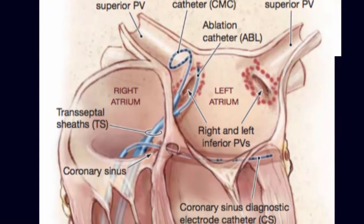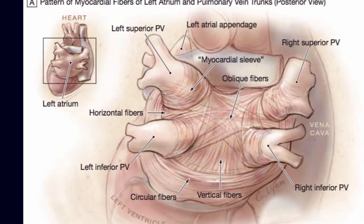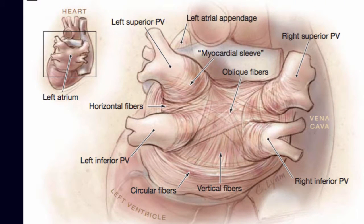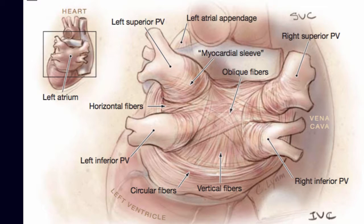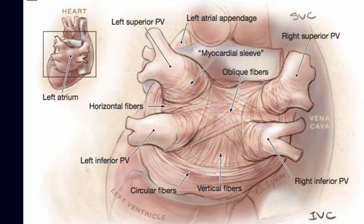This is a view of the left atria looking at it from the back. If you see the image here on the right, you have the SVC up here, down here you have the IVC, and you have the right atria all over here. And here you have the left atria with the left superior pulmonary vein, left inferior, right inferior, and right superior.